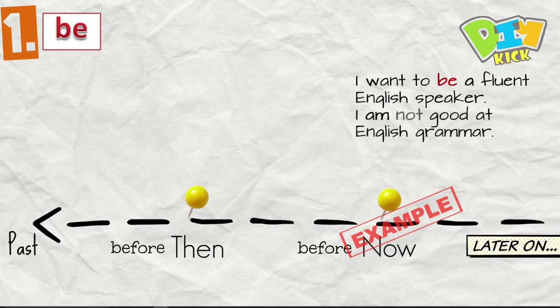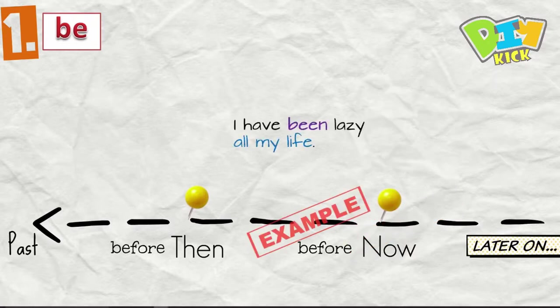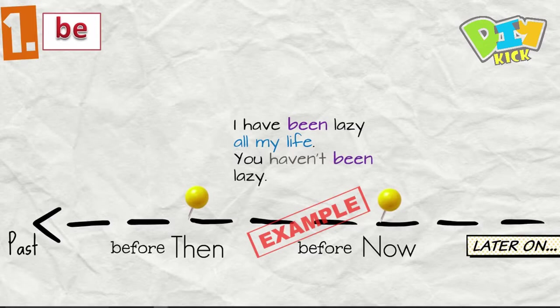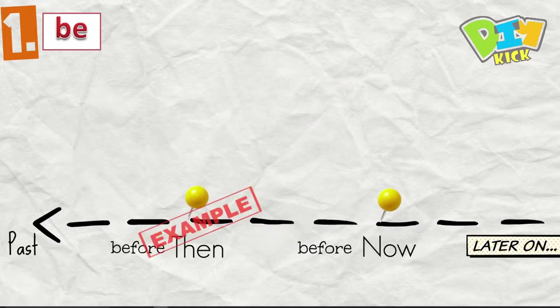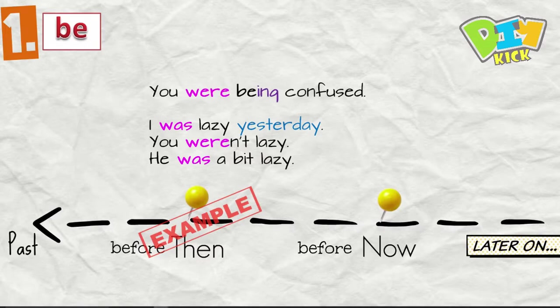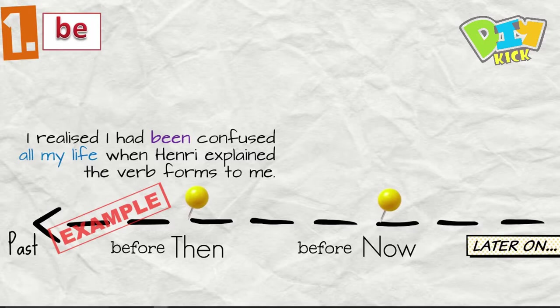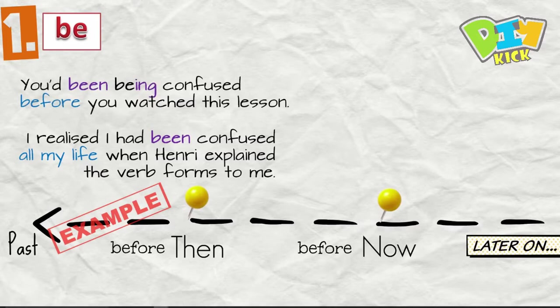All right. I am not good at English grammar. You are just being lazy. He isn't lazy normally. All right. Then we have I have been lazy all my life. You haven't been lazy. I've been being confused all my life. The past. I was lazy yesterday. You weren't lazy. He was a bit lazy. You were being confused. And before then, I realized I had been confused all my life when Henry explained the verb forms to me. You'd been being confused before you watched this lesson.